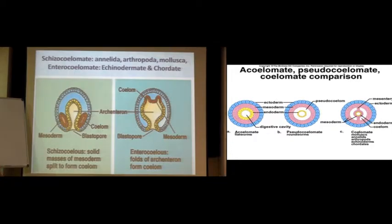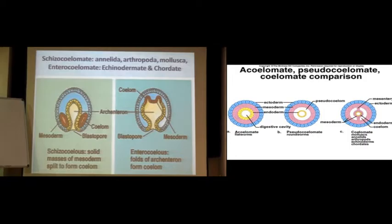What is archenteron? What is antron? When you say antron with respect to coelmates, you are talking about a cavity. All these words will be in your MCQs — you need to understand the word and then select the answer. I hope this is clear. Does anyone have doubts about schizocoelmates and enterocoelmates? We will go towards blastocoel and related concepts.